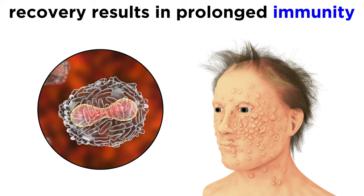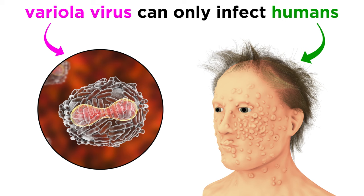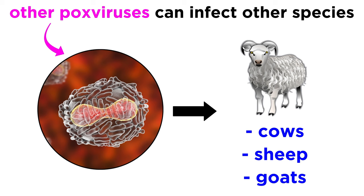The good news is that recovery from smallpox gives prolonged immunity to reinfection with variola virus, and the virus does not persist in the body after recovery. Just like polioviruses, variola viruses only infect humans. Other members of the pox virus family primarily infect cows, sheep, or goats, though accidental or occupational exposure via zoonosis is possible.